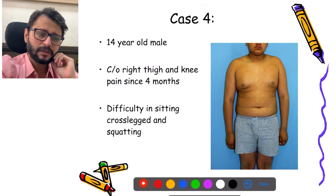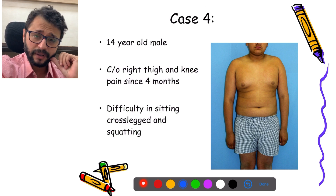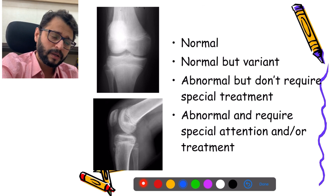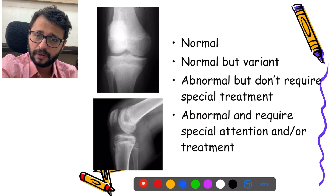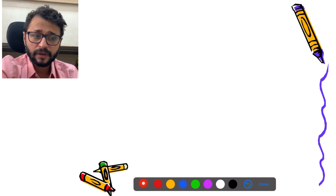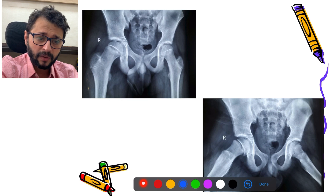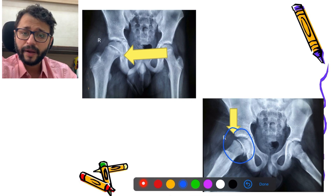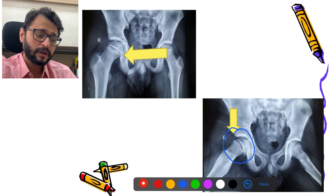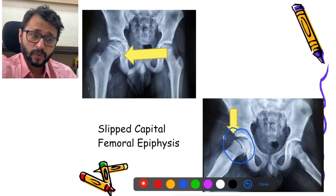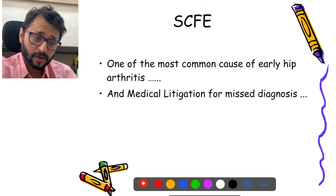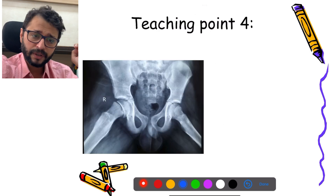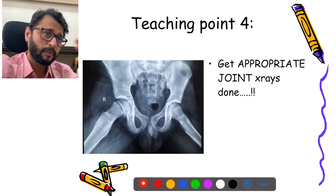Next case: an obese 14-year-old male with distal thigh and knee pain for four months, difficulty sitting cross-legged and squatting. Everything around the knee was done and labeled normal. The MRI showed a small grade one meniscal tear which was treated, but pain persisted. The diagnosis is being missed upstairs — a right-sided slipped capital femoral epiphysis causing referred pain to the distal thigh and knee. This is one of the most common causes of early arthritis in adolescents and a common cause of medical litigation. Teaching point: in any adolescent with thigh and knee pain, always get an x-ray of the pelvis.